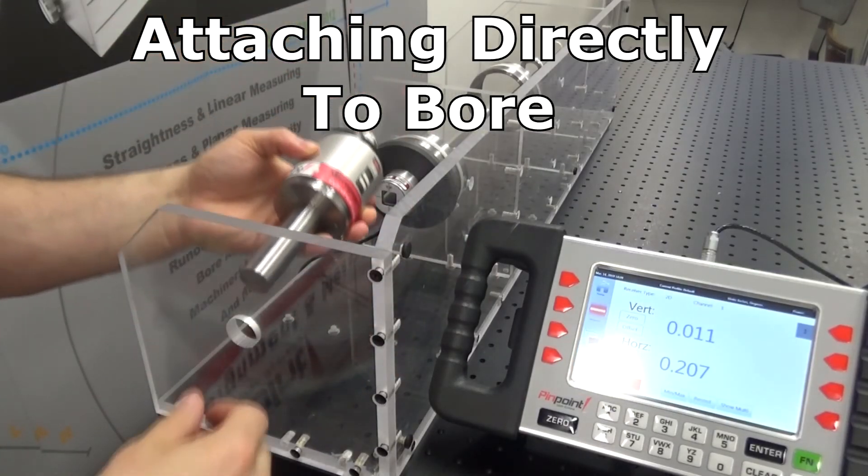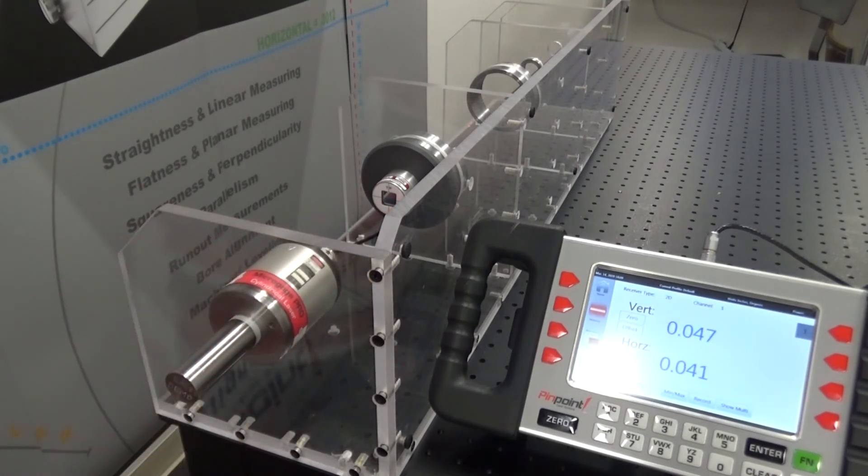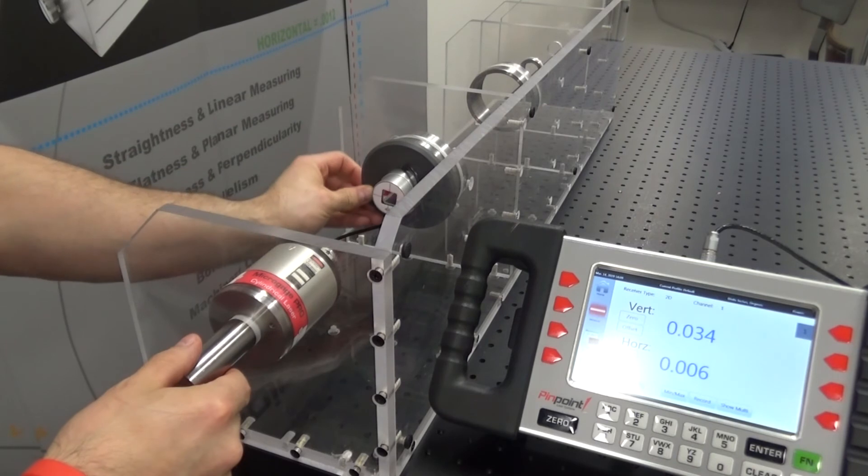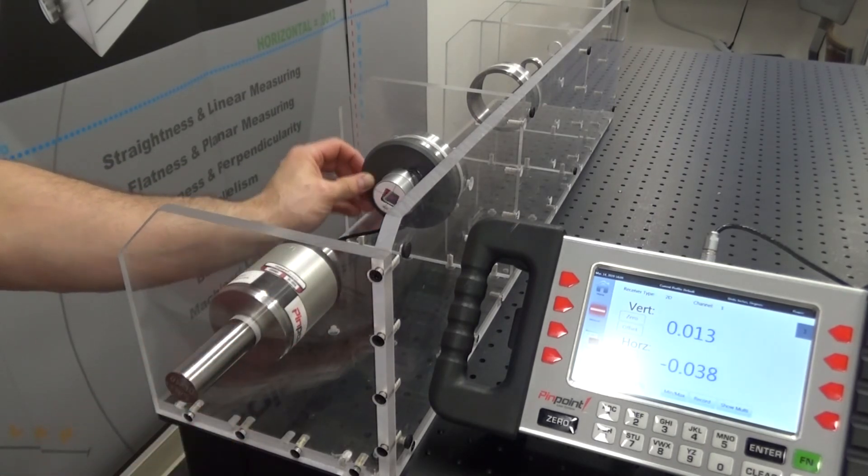Another option is to attach the cylindrical laser directly to a bore to create a precise straight reference datum line. By rotating the laser and receiver and averaging measurements, any mechanical errors in fixturing can be averaged out and the true center of rotation can be calculated.